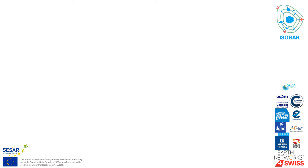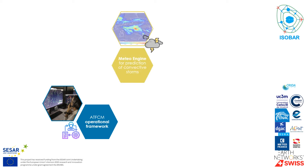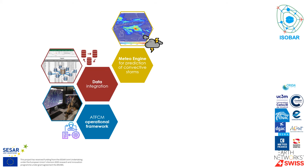The main building blocks of ISOBAR are an enhanced air traffic flow and capacity management process targeting weather-based imbalances, a meteo engine providing probabilistic forecasts of convective storms, and data integration from diverse ATM and meteo sources.